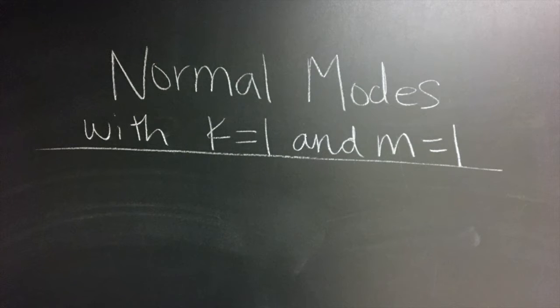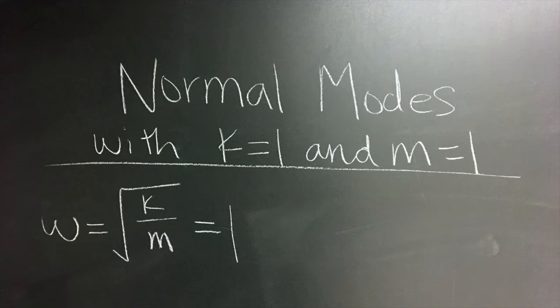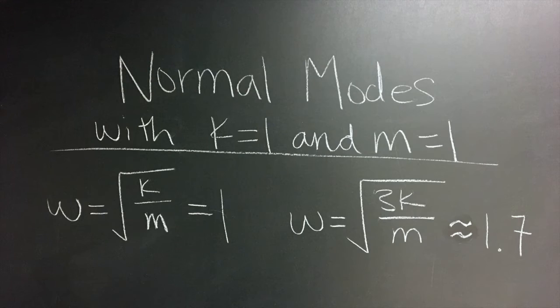We can easily calculate the normal modes of this system by hand. When we set k equal to 1 and m equal to 1, we get frequencies of 1 and approximately 1.7. But why do it by hand when you have Mathematica to do it for you?